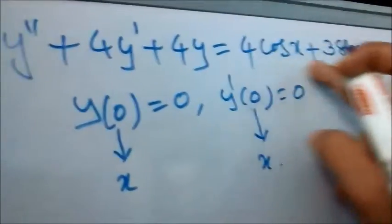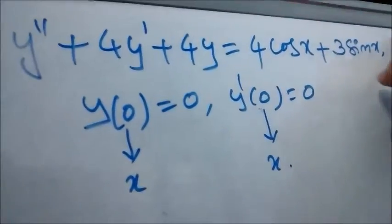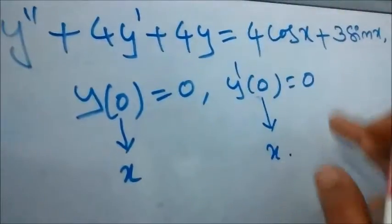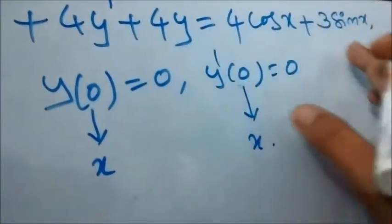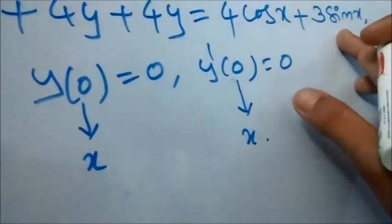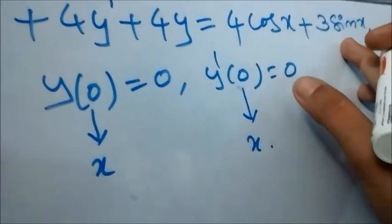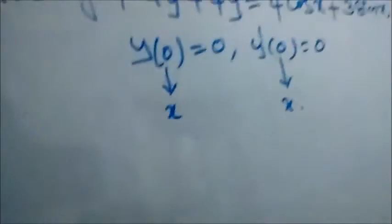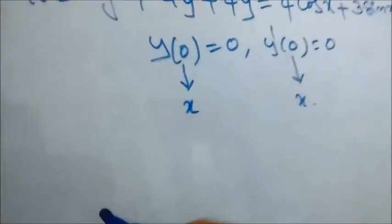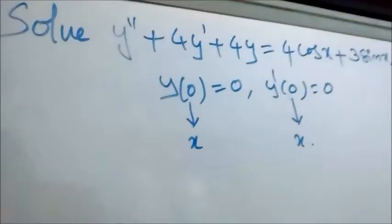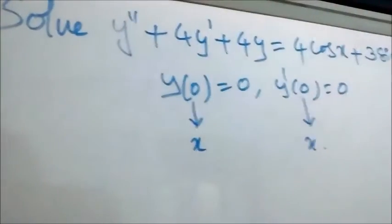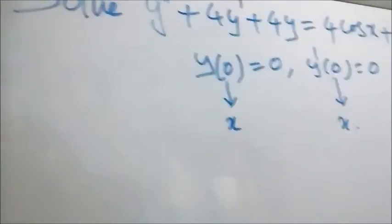By seeing the right-hand side with cos(x) and sin(x), we can identify this will go to rule 2. First, find the complementary function. Write down the given equation in operator form.